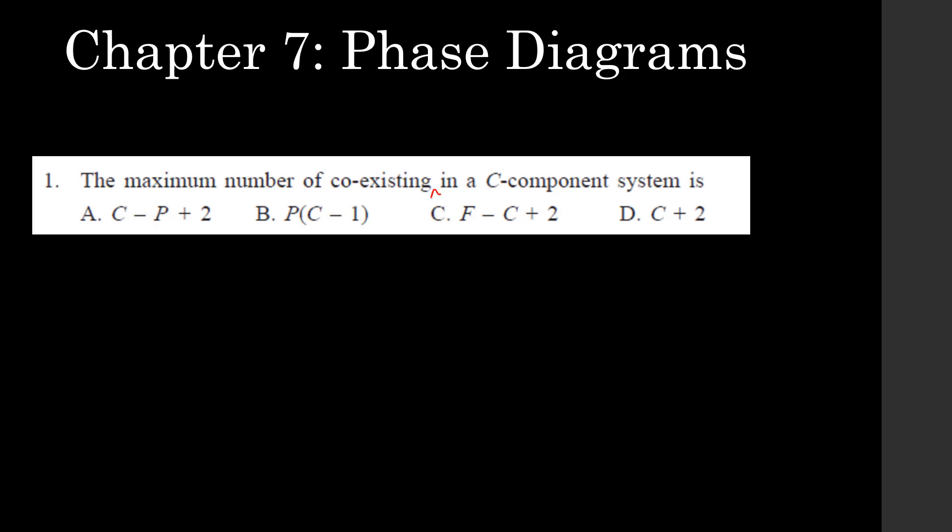I assume it is asking the maximum number of coexisting phases in a C-component system. We know this concept: F = C - P + 2. This is your Gibbs phase rule.